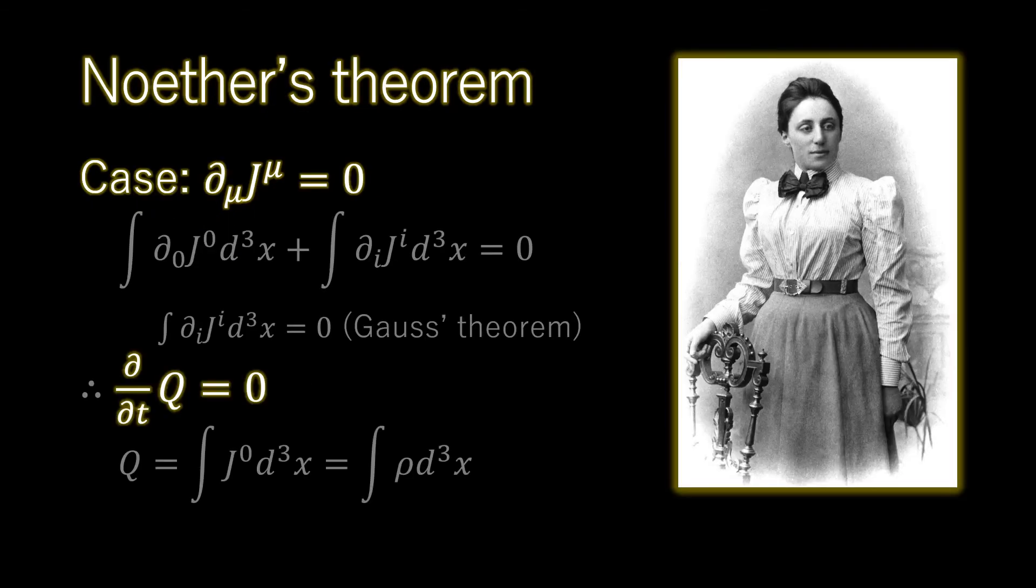Whenever the Lagrangian is invariant under a set of continuous transformations, a divergenceless current arises. This leads to an explicitly conserved charge.